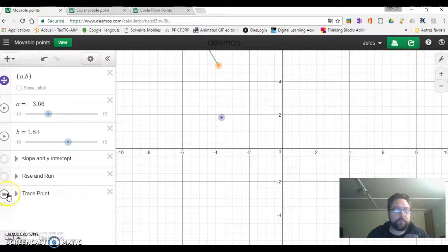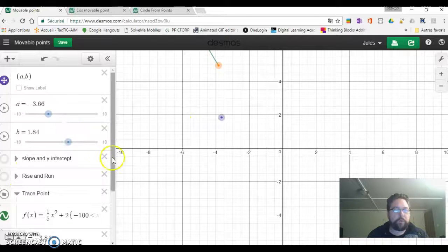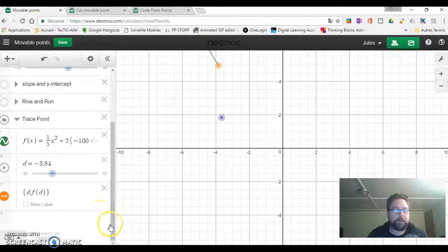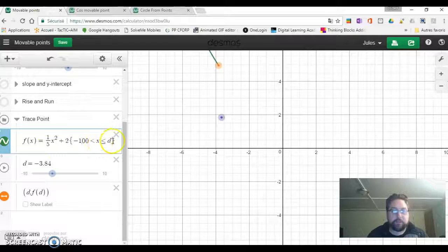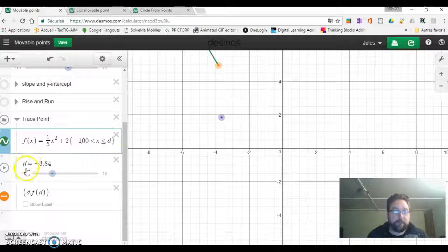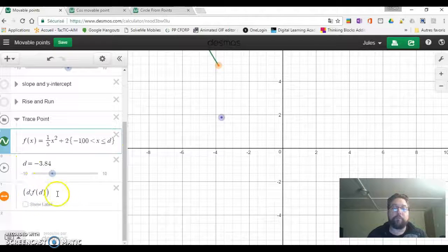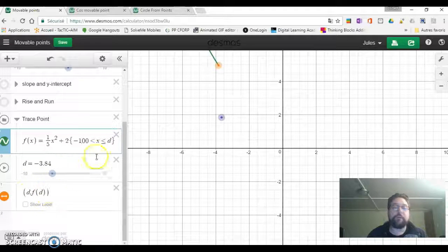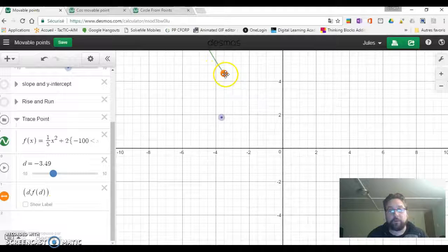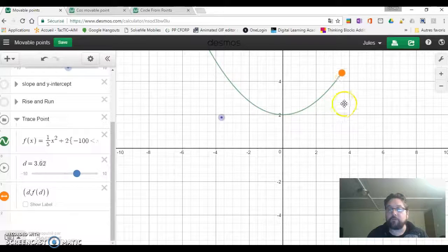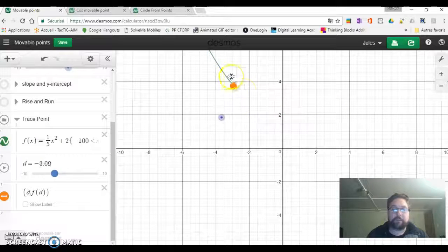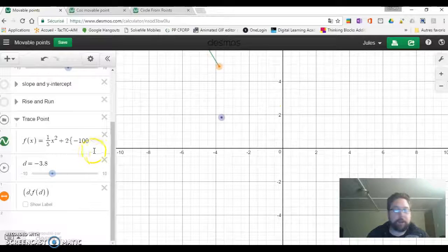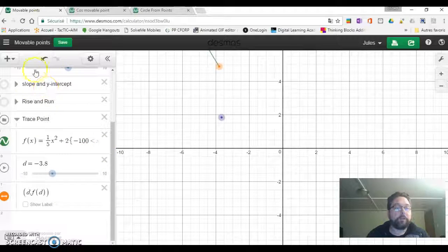A great way to do that is to trace a point as well. We notice here that we have a function that's restricted to a parameter, and we can use that parameter in a movable point again with the function of that parameter. Look what happens: you can just trace a graph. That's awesome.